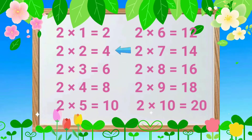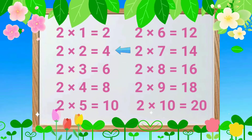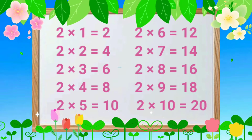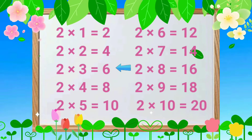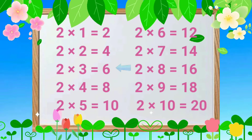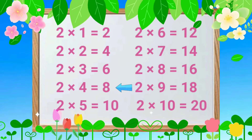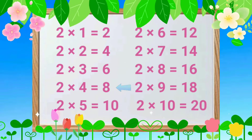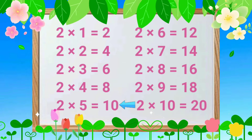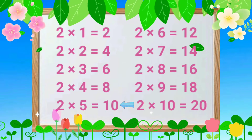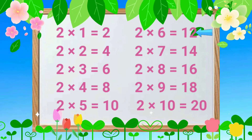2-2s are 4, 2-3s are 6, 2-4s are 8, 2-5s are 10, 2-6s are 12.